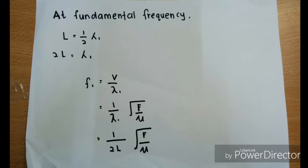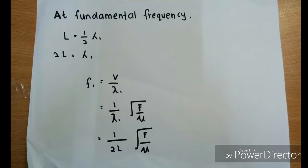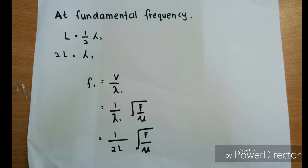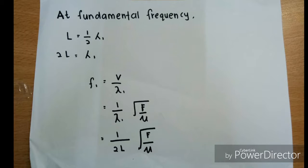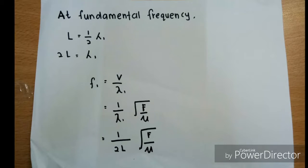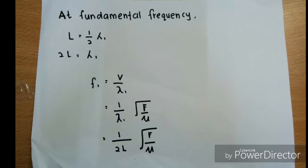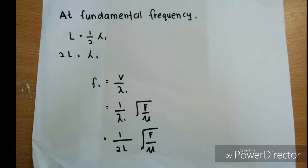And as we know, velocity is equal to square root force over mu. After that, we substitute lambda with 2L. So we will get the equation 1 over 2L times square root force over mu.